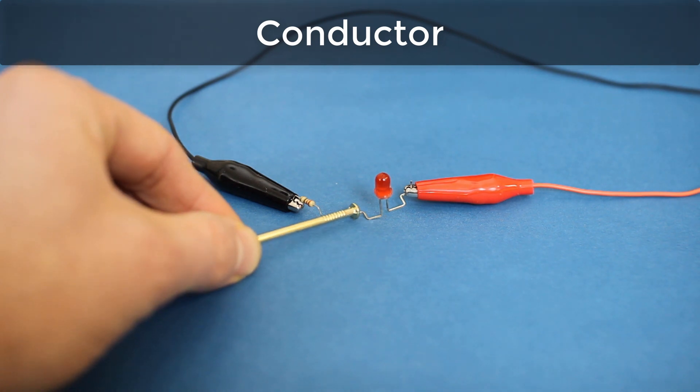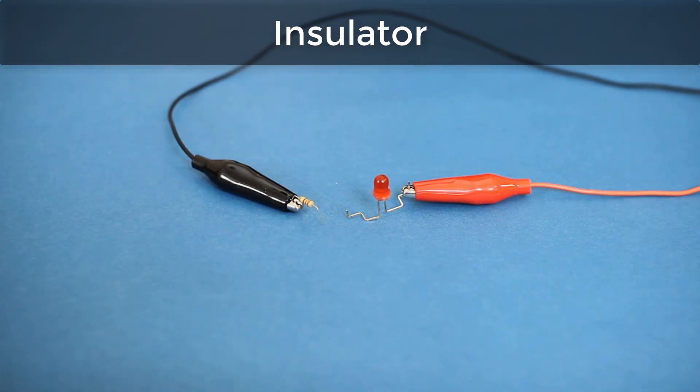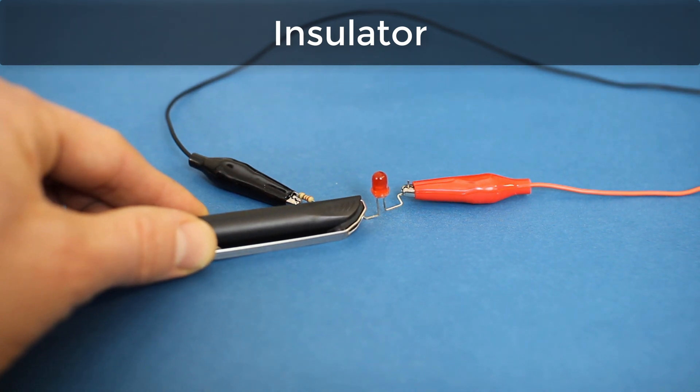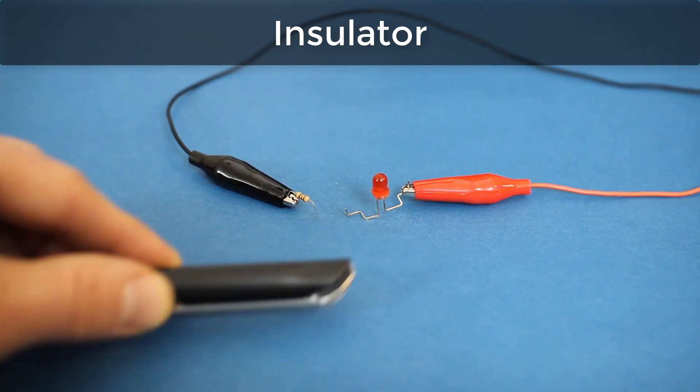Let's talk about how we can do that. A conductor is any material that allows electricity to flow through it, like this metal nail. An insulator, on the other hand, like this plastic pen cap, prevents electricity from flowing through it.